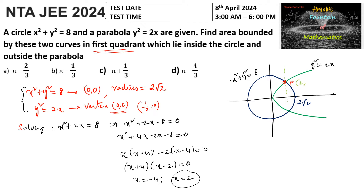When x = 2, substituting into y² = 2x gives y² = 4, so y = 2. Thus the intersection point is (2, 2). The shaded region we consider is inside the circle and outside the parabola.